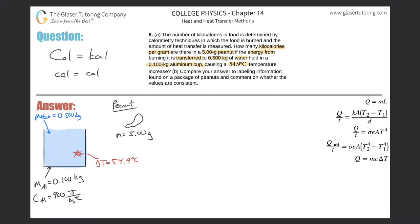Nothing is lost — obviously that's not perfectly true, but since we don't know the loss value, we have to assume it, just like we assume no friction in many problems. So whatever energy comes out of this peanut after it's burned — similar to when you burn wood and energy is released — we'll treat as fully converted.